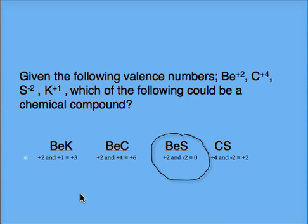Beryllium, with a charge of positive two, and sulfur, with a charge of negative two, make a total of zero. Beryllium and sulfur would be likely to react and form a compound.